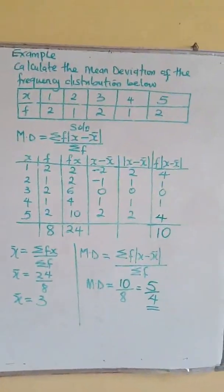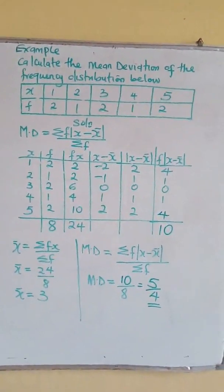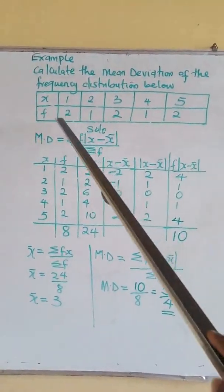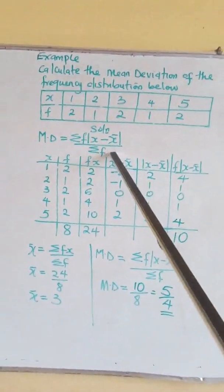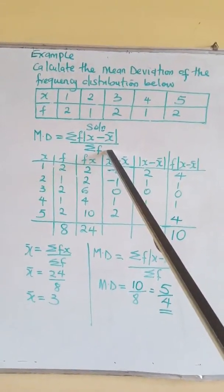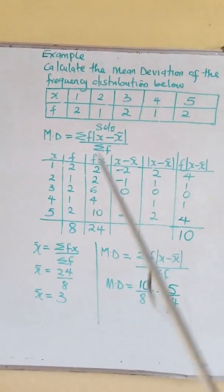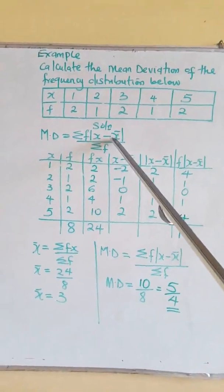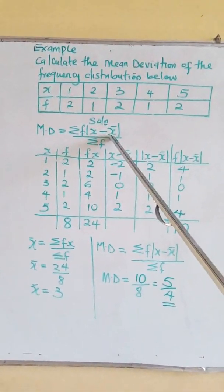Now let's look at this example: calculate the mean deviation of the frequency distribution below. If you look at this question, you discover there is frequency. So since there is frequency, this is the formula we are going to use: summation f multiplied by the absolute value of x minus x̄, over summation f. If you look at the formula, you discover there is mean, our x̄. So for us to solve, we need to calculate that x̄ first.